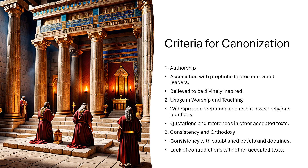What is the criteria for canonization? They look for authorship — an association with prophetic figures or revered leaders. They're going to count the first five books of the Bible, attributed to the leadership of Moses, as authoritative because Moses is a huge figure in Judaism and in the Old Testament.